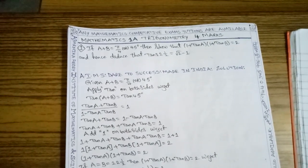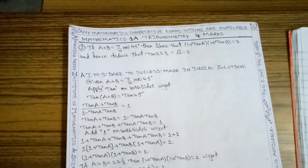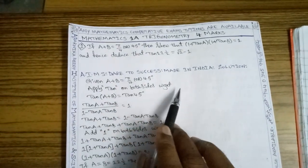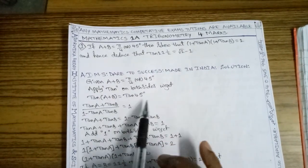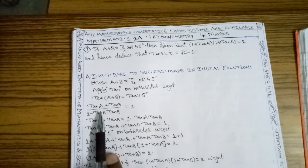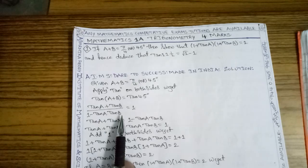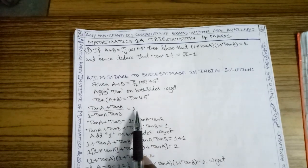Here, given that A plus B equals 45 degrees. Apply tan on both sides. We get tan of A plus B equals tan 45. Using the tangent addition formula: tan A plus tan B divided by 1 minus tan A tan B equals tan 45, which equals 1.